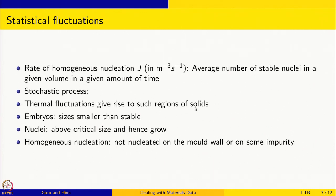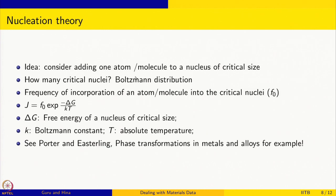Thermal fluctuations give rise to solid-like regions in the melt. Those smaller than the critical size are embryos; they form and dissolve. Those above the critical size are nuclei and can grow. One approach to finding the nucleation rate is to track the probability of particles growing or shrinking at each stage until they pass the critical size.